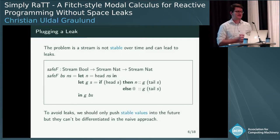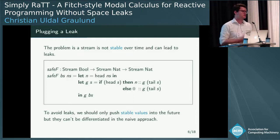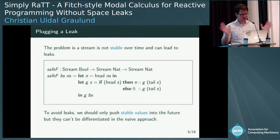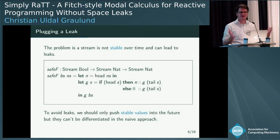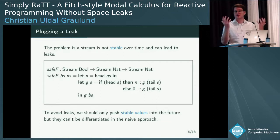Can we fix it? The problem is that streams are not stable over time — they change in the functional reactive setting, so you should not push them into the future. The fix is to evaluate the head up front: since you only care about the head, you evaluate it immediately and only push the one single natural number into the future. This is fine because natural numbers don't change. The idea is: to avoid leaks, only push stable things into the future. The problem is that in the naive approach, it's very hard to differentiate stable from unstable values, and composition makes it worse.